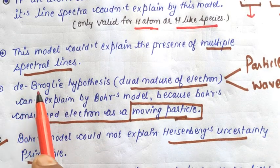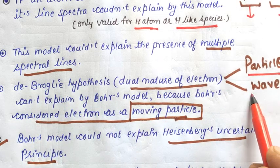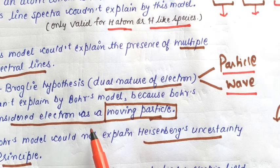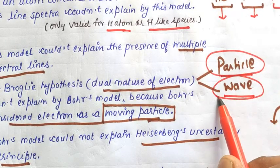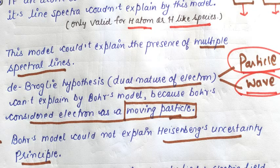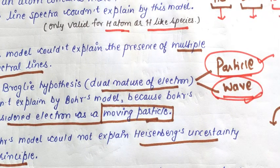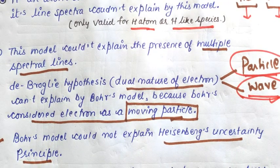The third limitation is the De Broglie hypothesis — the dual nature of the electron. De Broglie suggests that the electron has a dual nature: one is particle nature and one is wave nature. This could not be explained by Bohr's model because Bohr considered the electron only as a moving particle. Experiments like the Davisson-Germer experiment showed that the electron behaves as a wave. So De Broglie's hypothesis of dual nature cannot be explained by Bohr's model.